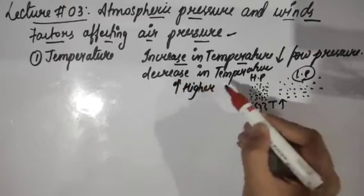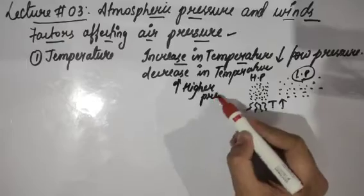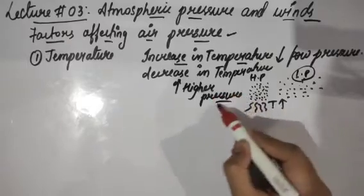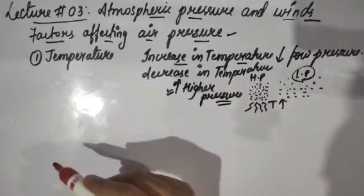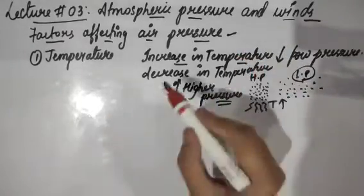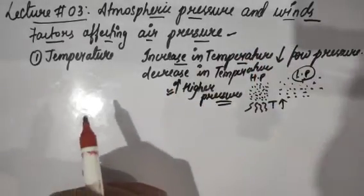For example, if we talk about polar regions, the polar regions have very low temperature, and that is why we find a higher pressure region at poles and a very low pressure region at the equator.